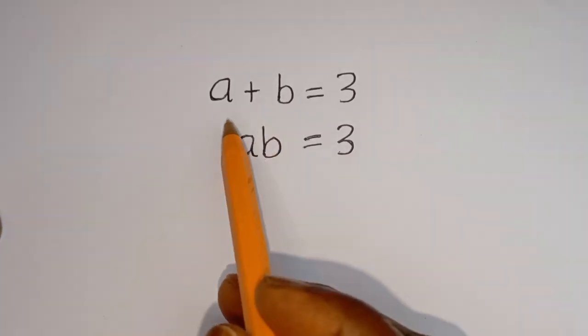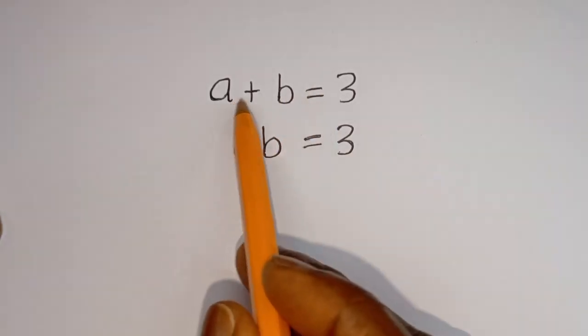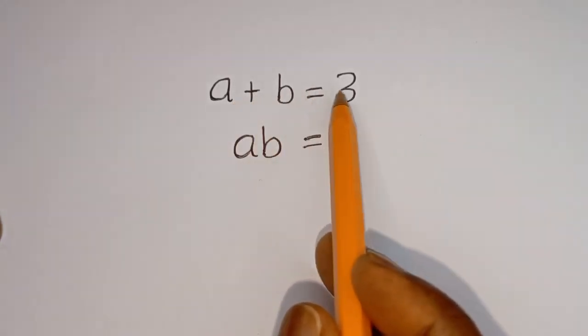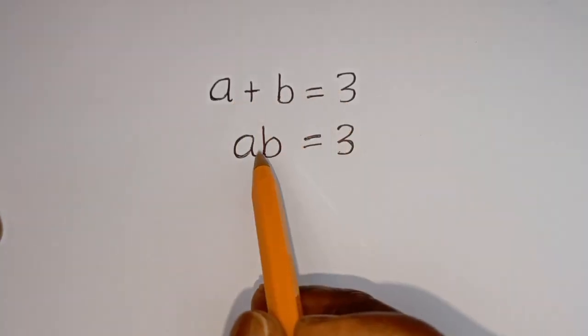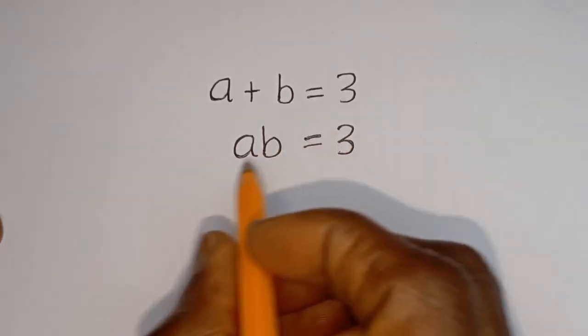Hello. How to solve for A and B in this equation? A plus B is equal to 3, and A times B is equal to 3.